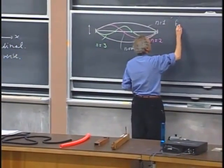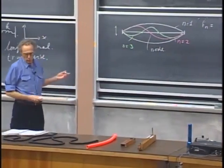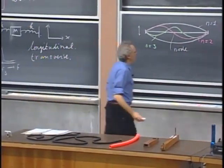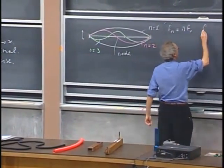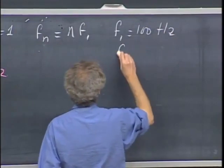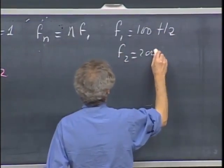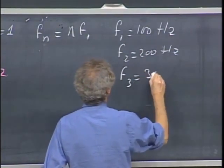The frequency that I generate, I call that F of N. N is an integer. It could be one, two, three, or four, is linear in F1. In other words, if F1 were 100 hertz, then F2 would be 200 hertz, and F3 would be 300 hertz.